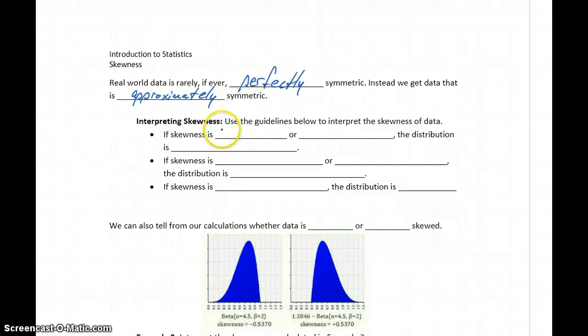So if we get a skewness that's less than negative one, or more than negative one, then we would say that our distribution is highly skewed. So very, very far from being symmetric.